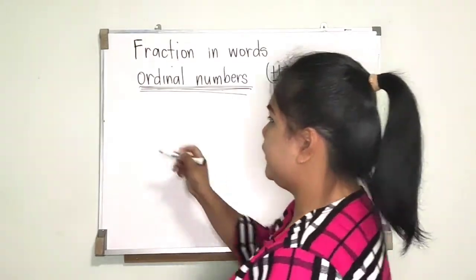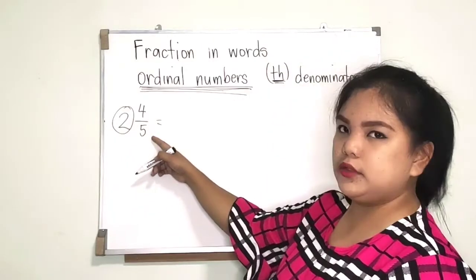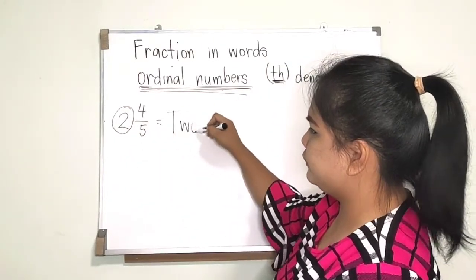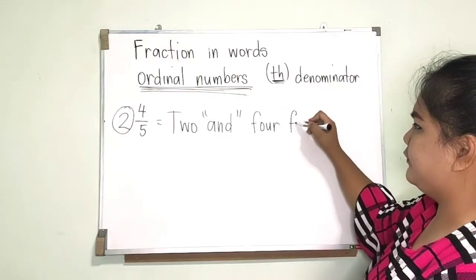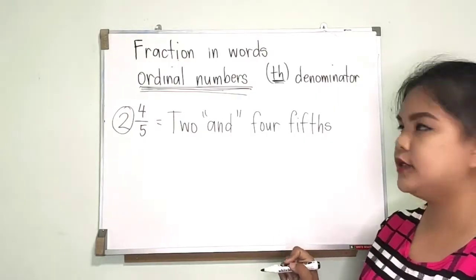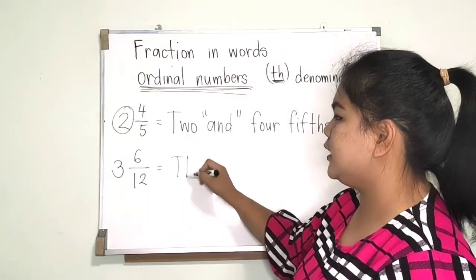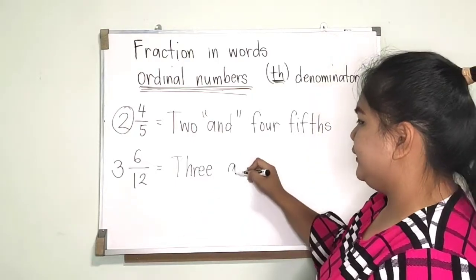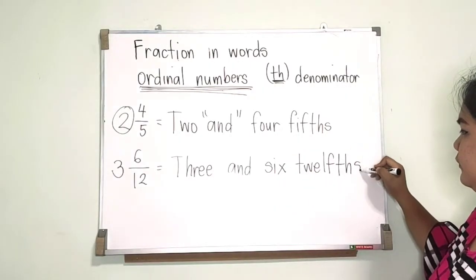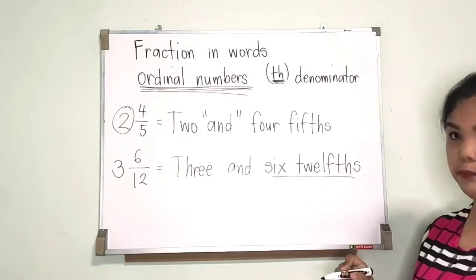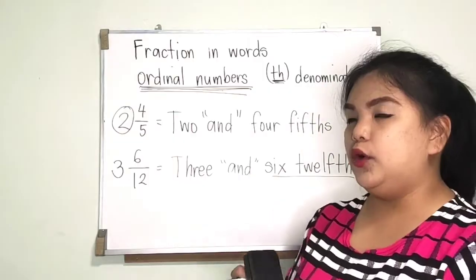What if we have a whole number? For example, two and four fifths — 'two' is the whole number, so we need to separate it from the fraction using the word 'and.' So it is written as 'two and four fifths.' Another example: three and six twelfths — we write 'three and six twelfths,' where 'twelfths' is the ordinal number. The word 'and' is used to separate the whole number and the fraction.